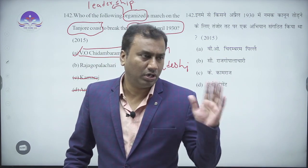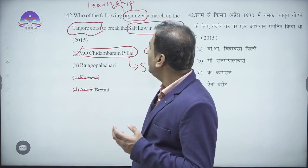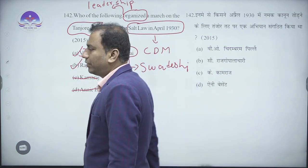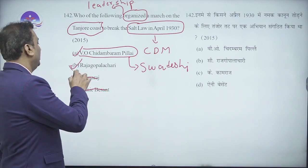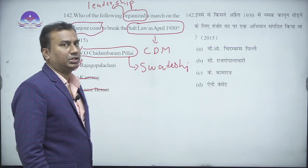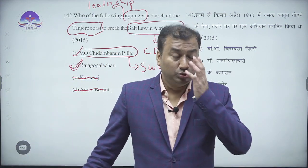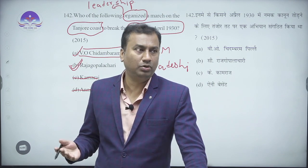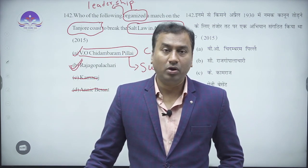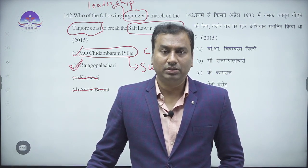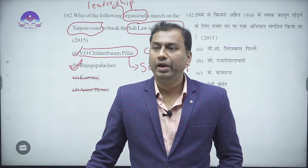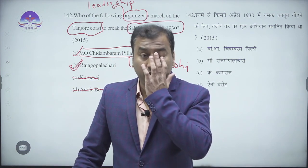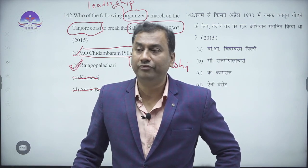We have clear-cut evidence that the Salt March on the Tanjore coast was organized by Rajagopalachari. He was one of the most important Congress leaders. Rajagopalachari was very close to Mahatma Gandhi. After independence, he served as the Chief Minister of Tamil Nadu, then as Governor of West Bengal, and then as Governor General of India.